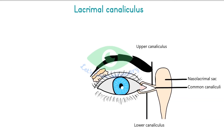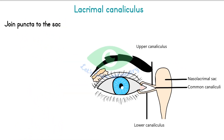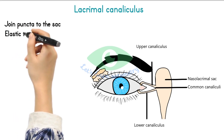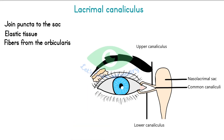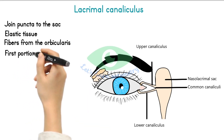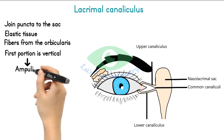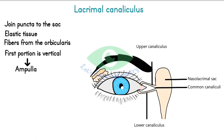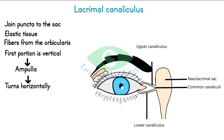The lacrimal canaliculus: the canaliculi are tubes in the upper and lower lids that join the puncta to the lacrimal sac. The walls of the canaliculi contain elastic tissue and are surrounded by fibers from the lacrimal portions of the orbicularis muscle. The first portion of the canaliculus is vertical and extends approximately 2 mm. A slight dilation, the ampulla, is at the base of the vertical portion. The canaliculus then turns horizontally to run along the lid margin for approximately 8 mm.